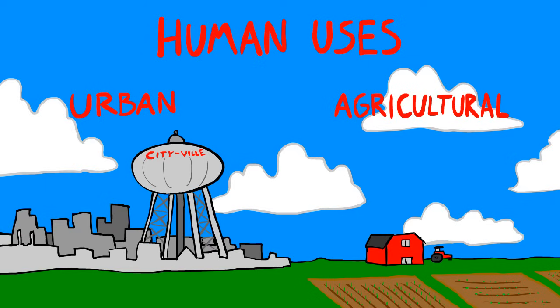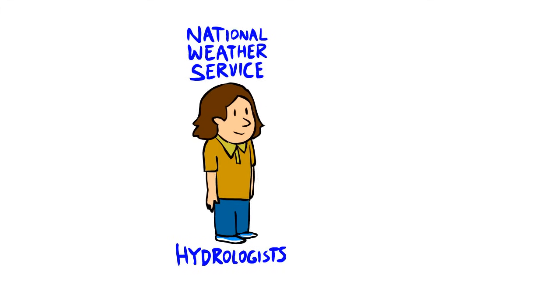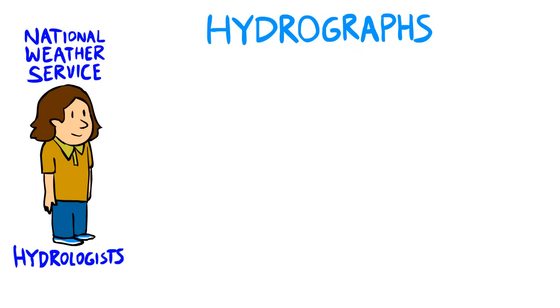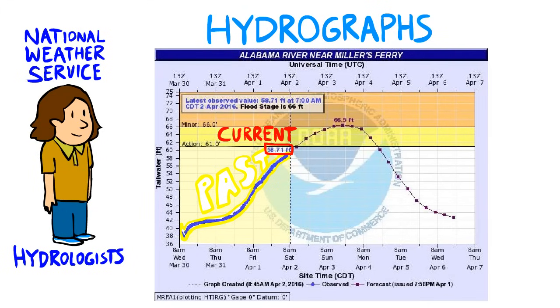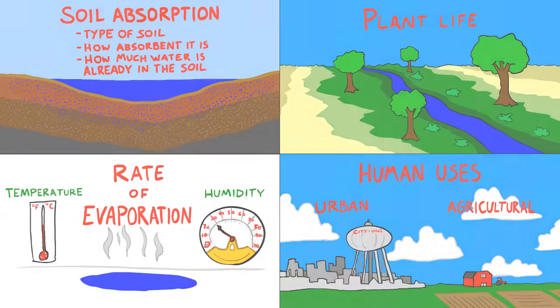Knowing these factors, scientists, specifically hydrologists at the National Weather Service, produce what are called hydrographs, which are basically graphs showing the past, current, and predicted levels of streams and rivers across the United States. Thinking about all of the factors that go into a hydrograph, you can see how complex it is to determine the amount of water that will flow downstream after a rainstorm.